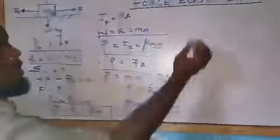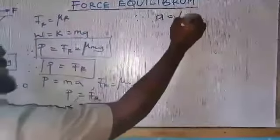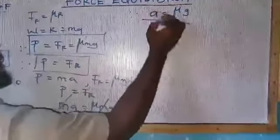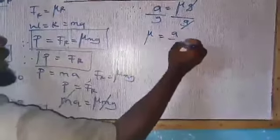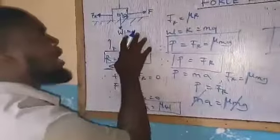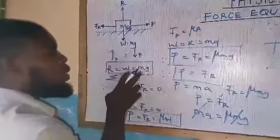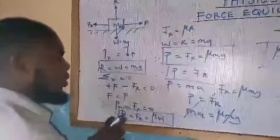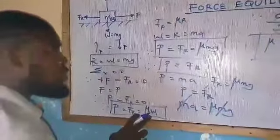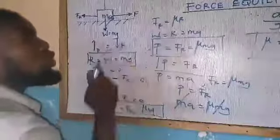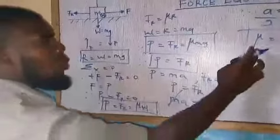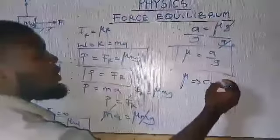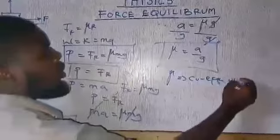Taking note of this condition — that P equals FR — we can say that Ma equals μMg. Mass cancels on both sides, therefore a equals μg. Dividing both sides, μ equals a over g. So for this condition: R equals W equals Mg; pulling force equals frictional force equals μW; and since W equals R and both equal Mg, μ stands for the coefficient of friction.